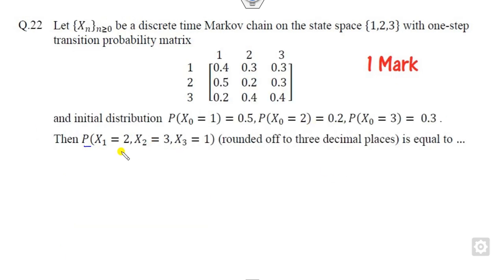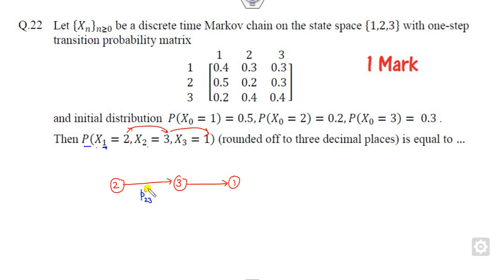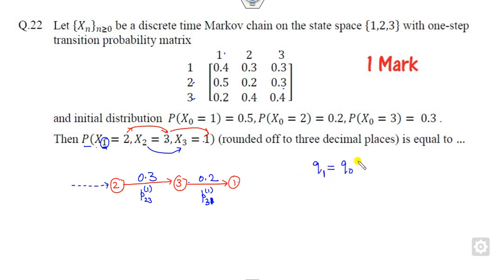Now look at question 22. As discussed in theory, the chain goes: state 1 to 2, state 2 to 3, and state 3 to 1. You need to check the time period. From 1 to 2 is one time period, from 2 to 3 is one time period, and from 3 to 1 is one time period. The probability P₂₃ is 0.3 and P₃₁ over the first time period. To find the one-step probability, you use the initial probability. You find K₁ = K₀ × P and solving this will give you three answers corresponding to states 1, 2, and 3.